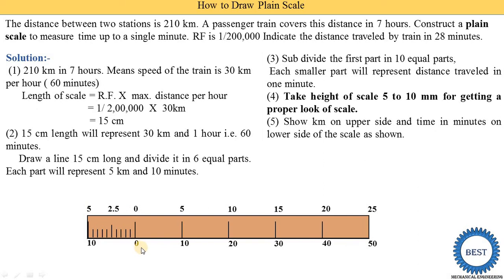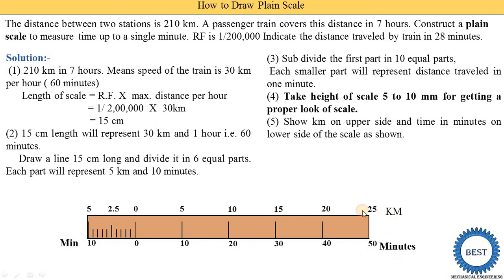We start from 0. From 0 to 50, plus 10, we indicate 60 minutes. One main part indicates 10 minutes and each subdivision indicates 1 minute. The upper part indicates kilometers: 0, 5, 10, 15, 20, up to a total of 30 kilometers. The lower side indicates units near minutes and the upper side values indicate kilometers.